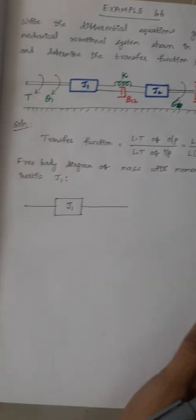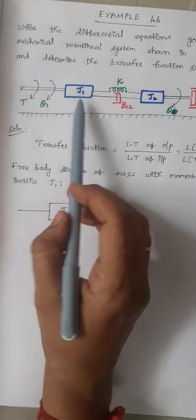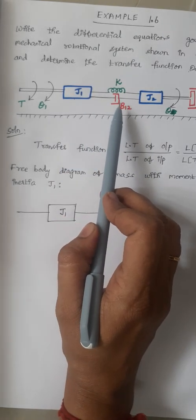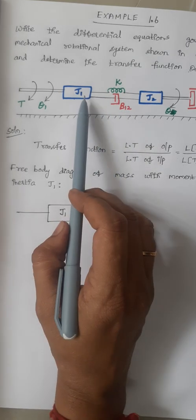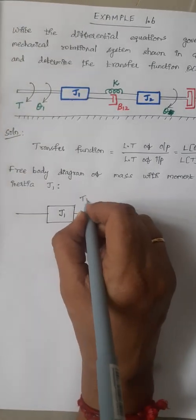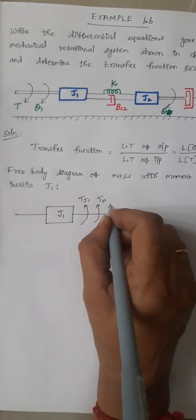In the next step, we are going to draw the free body diagram of mass j1. As usual, count the number of elements connected to j1. Here we have two elements directly connected to j1, so there will be three opposing torques — one produced by j1, another by k, and another torque produced by b12.